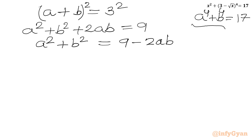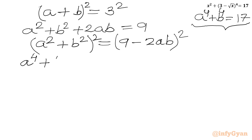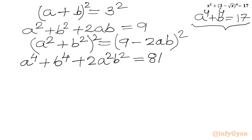Now we know a⁴ plus b⁴, so let us square a² plus b² once again using the formula (a² + b²)² equals a⁴ plus b⁴ plus 2a²b². Expanding the right-hand side: (9 minus 2ab)² equals 81 plus 4a²b² minus 36ab.